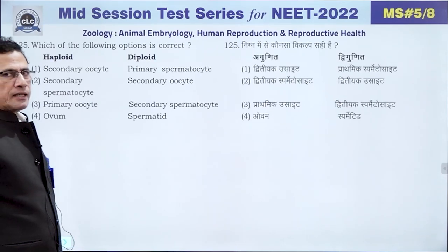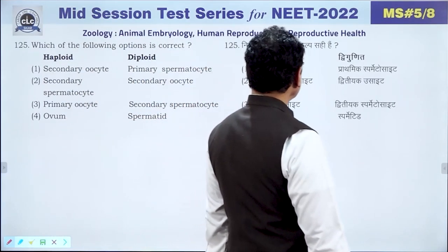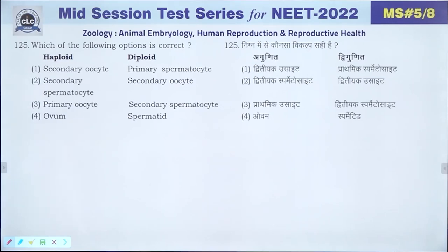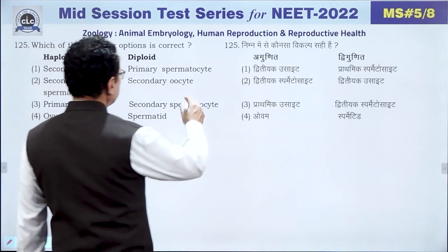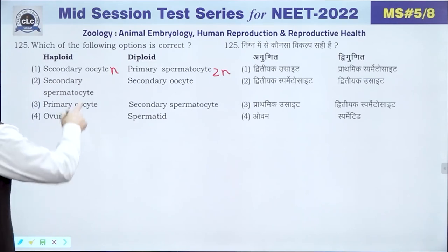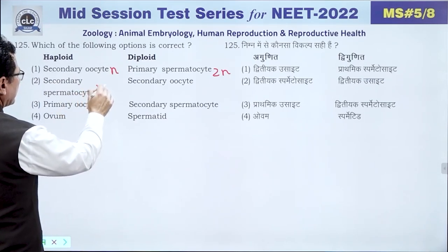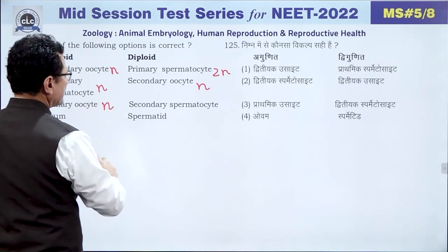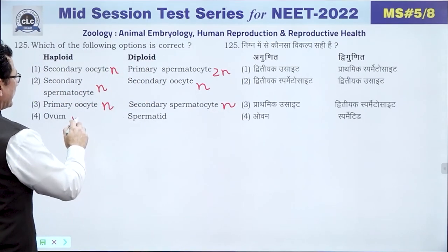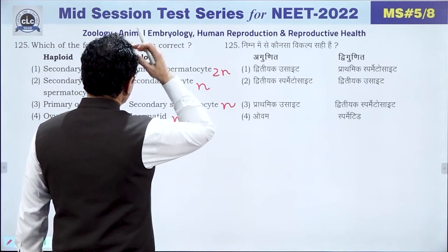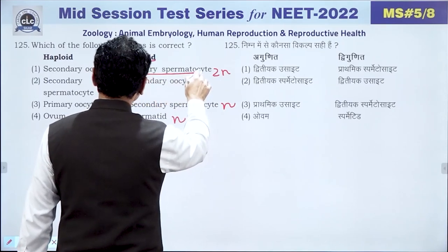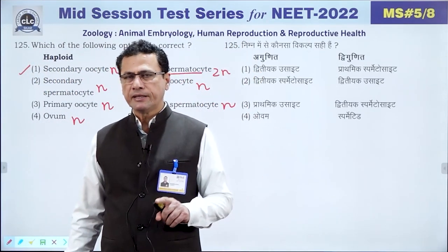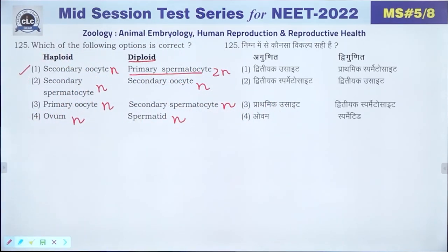Question 125 involves matching haploid and diploid cells during gametogenesis. The answer is 1 — the correct combination identifying which cells are haploid and which are diploid during gametogenesis as per the provided matching.